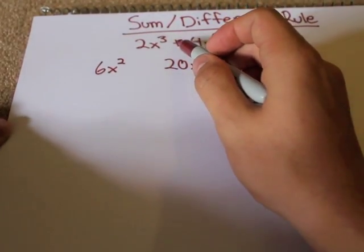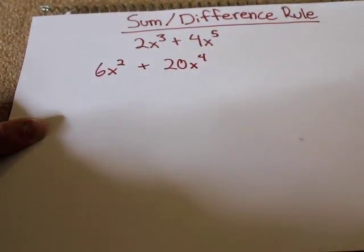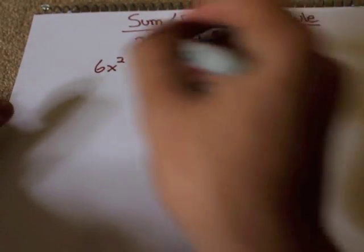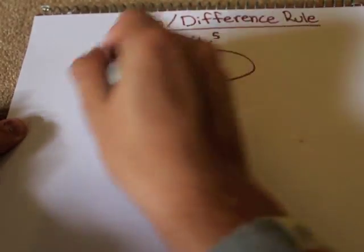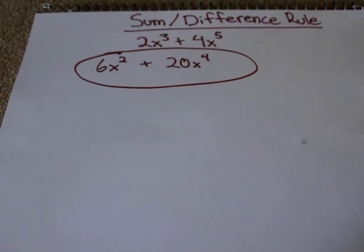And then we have to remember to add in this addition sign since we're adding two functions. And this would be your final answer. This is your derivative: 6x² plus 20x⁴. And that's just about how simple the sum and difference rule is.